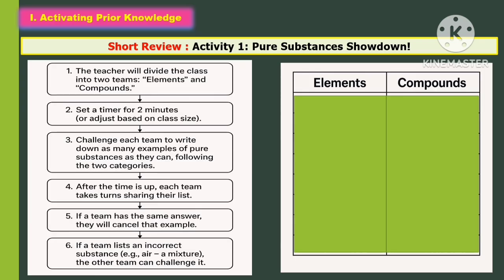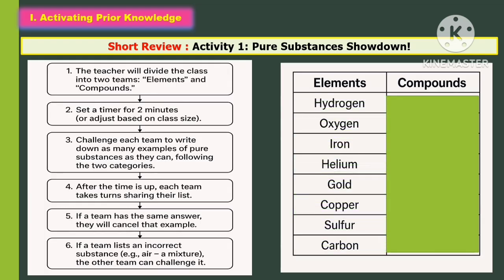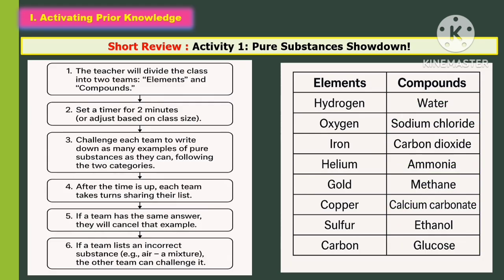In activating prior knowledge, students will accomplish Activity Number 1, which is all about the Pure Substances Showdown. The teacher will divide the class into two teams: the Elements and the Compounds. Set a timer for two minutes, or adjust based on class size. Challenge each team to write down as many examples of pure substances as they can following the two categories. If a team has the same answer, they will cancel the example.